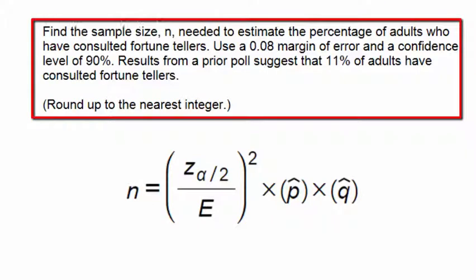Find the sample size n needed to estimate the percentage of adults who have consulted fortune tellers. Use a 0.08 margin of error and a confidence level of 90 percent. Results from a prior poll suggest that 11 percent of adults have consulted fortune tellers. Round up to the nearest integer.